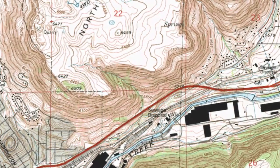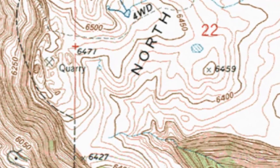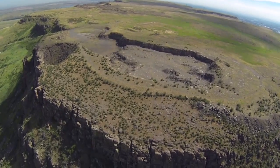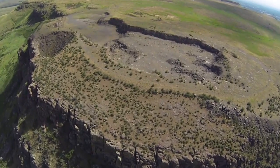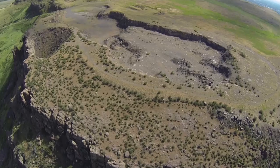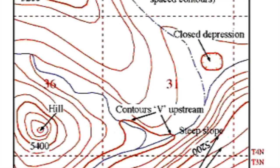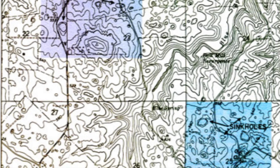There is another way to make concentric circles besides hilltops: pits. They make concentric circles with lower elevations to the center. These tend to be marked with hachure lines pointing in towards the center to distinguish them. Being interested in caves, I look for maps with lots of these hachure marks, which are associated with sinkholes.